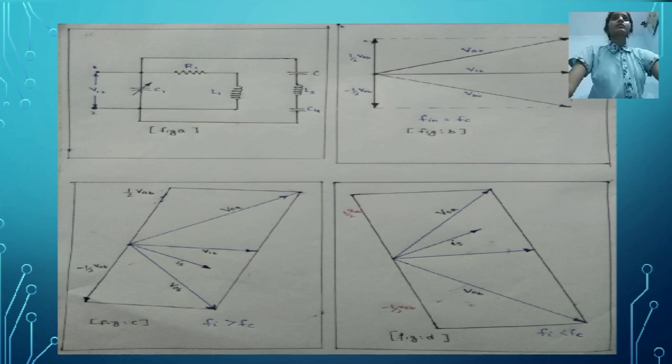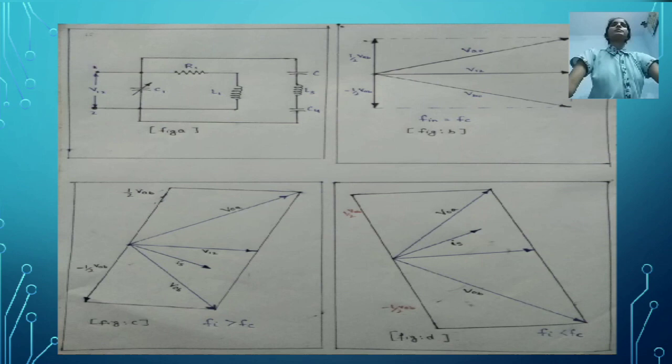As a result, the resultant voltage VAO is increased and the resultant voltage VBO is decreased. VAO is the voltage applied across diode D2 and VBO is the voltage applied across diode D1. Hence, when the incoming signal frequency is greater than the resonant frequency, the net output voltage becomes positive.